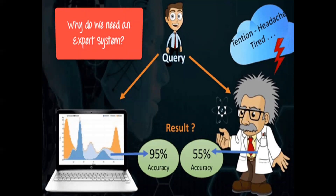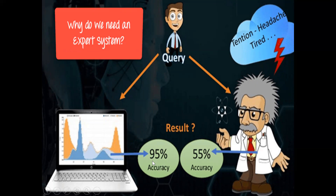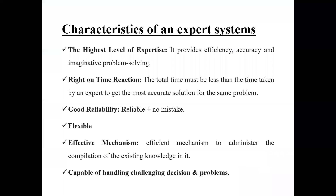Why do we need an expert system? Consider a person working 24 hours a day — with tension, headaches, and fatigue — and the result they give is only 55% accuracy. But if we talk about an expert system, the results are 95% accurate. So the person is working 24 hours a day with lots of issues and giving 55% accuracy, whereas the expert system gives results within minutes or seconds with 95% accuracy. That's why we need an expert system.